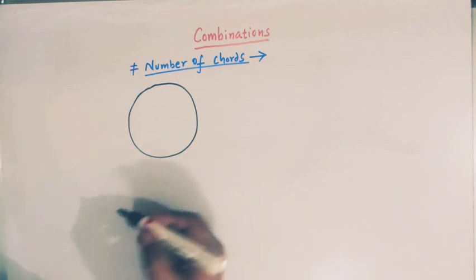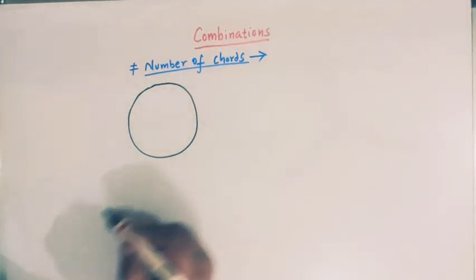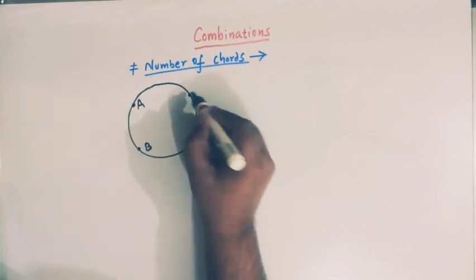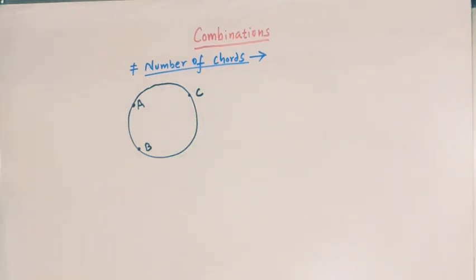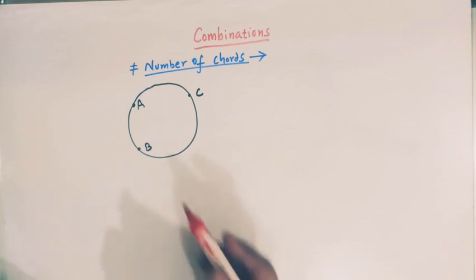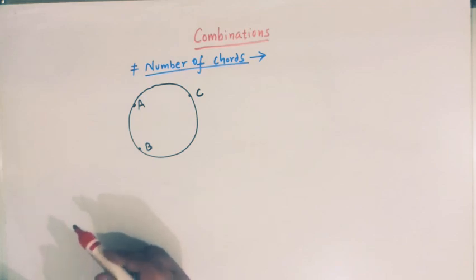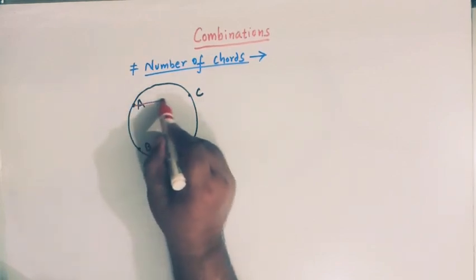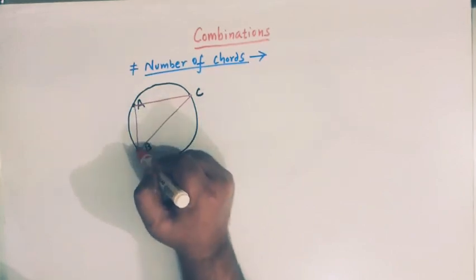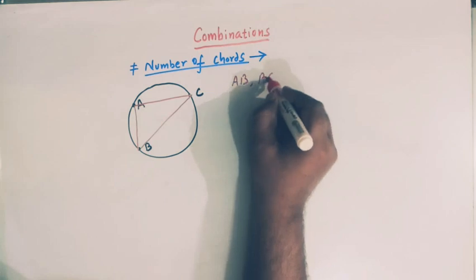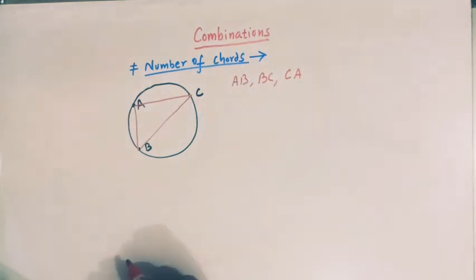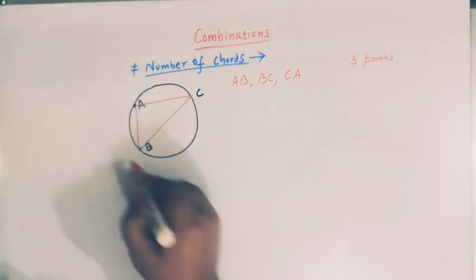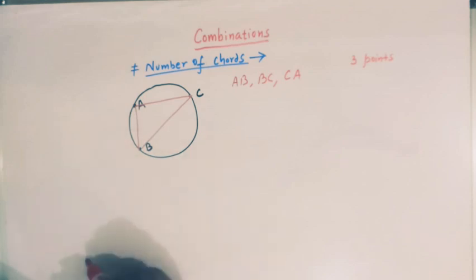Suppose three points are given on the circumference of this circle — point A, point B, and point C — and we have to find the total number of chords which can be drawn through these three points. By simple observation we see that we can draw three chords: the first one is AB, then we have BC, and then we have CA. So when we have three points on the circumference of a circle, we can draw three chords.